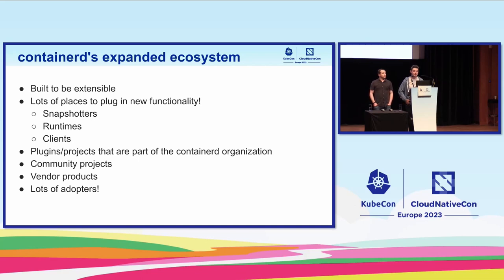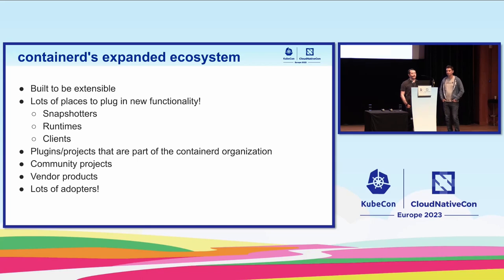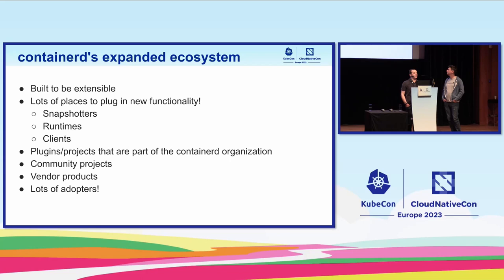Sam is going to tell us about the ContainerD ecosystem. One of the core ideas for ContainerD is to be flexible and extensible — it comes with a full set of features and implementations, but many of those implementations can be swapped out for something else. That includes snapshotters, which handle image layer storage, and runtimes, which control the container execution environment. A substantial client library also means that high-level client programs are easy to build.